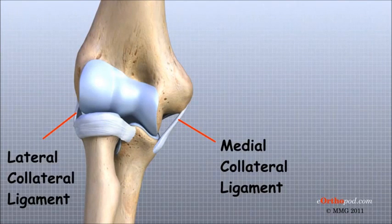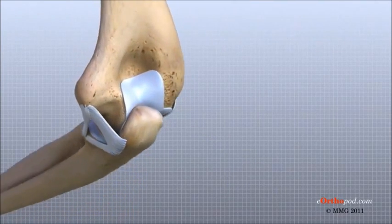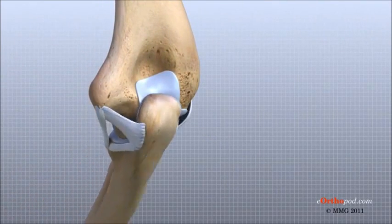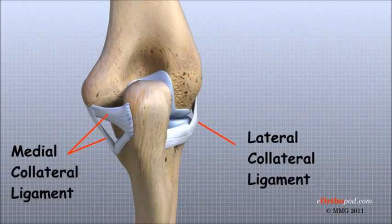The medial collateral ligament is on the inside edge of the elbow. The lateral collateral ligament is on the outside edge. Together these two ligaments connect the humerus to the ulna and keep it tightly in place as it slides through the groove at the end of the humerus. These ligaments are the main source of stability for the elbow.